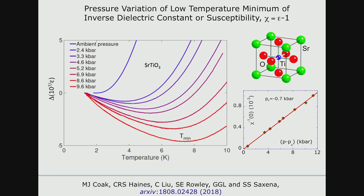What is plotted now is not the susceptibility but the inverse susceptibility, so the peak is now a minimum. We see that the minimum position shifts down as the pressure decreases and one enters the border of the ferroelectric state, and appears to disappear at the ferroelectric quantum critical point itself. All the evidence is that the ferroelectric transition in this case is second order down to the lowest temperature.